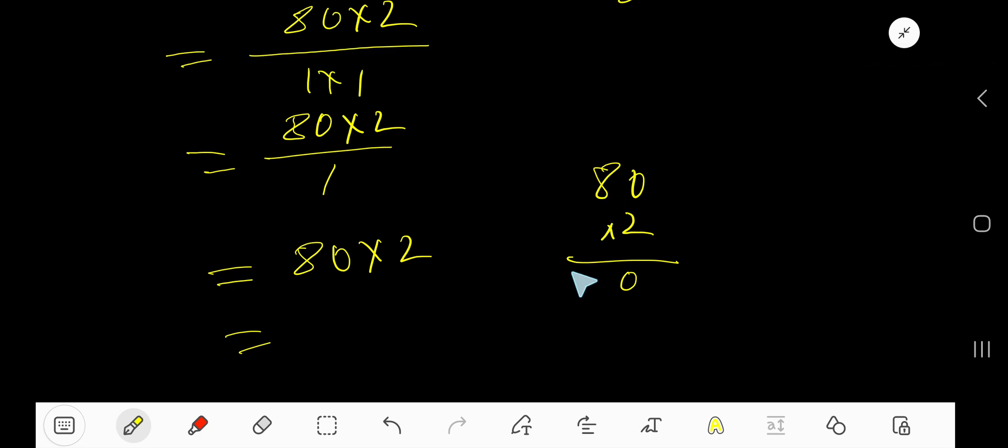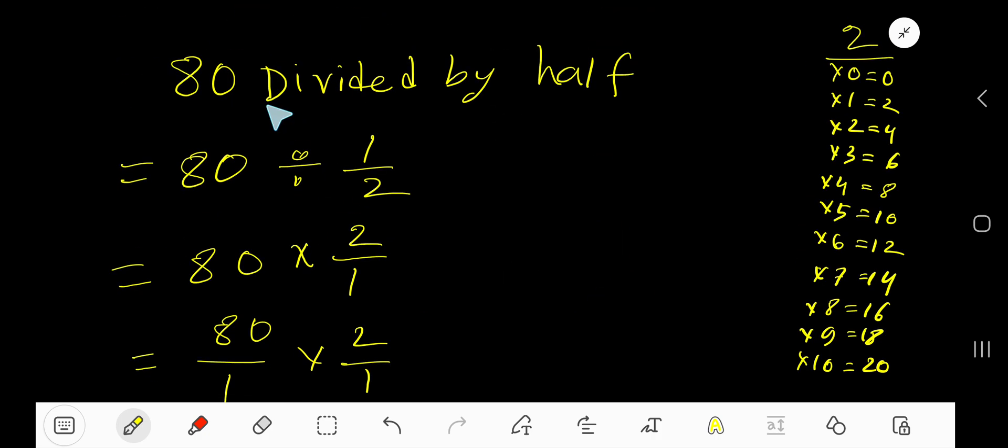8 is 16. Okay, 160. So our answer is 160. 80 divided by half equal to 160.